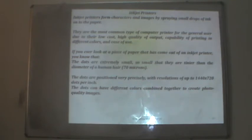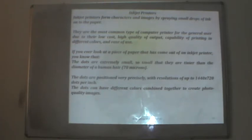Inkjet printers form characters and images by spraying small dots of ink on the paper. They are the most common type of computer printer for general users due to their low cost, high quality output, ability to print in different colors, and ease of use. The dots are extremely small — tinier than the diameter of a human hair — positioned with resolutions of up to 1440 x 720 dots per inch, and different colors combine to create photo-quality images.